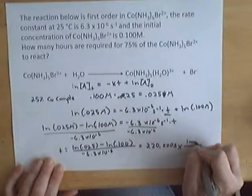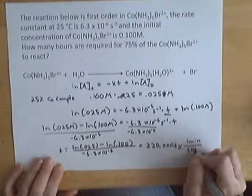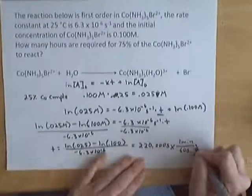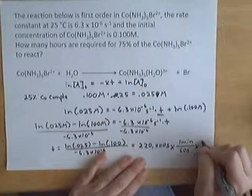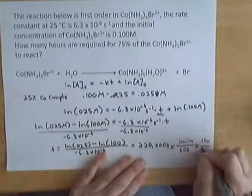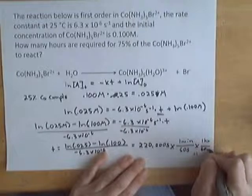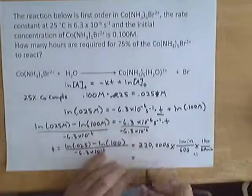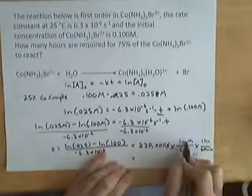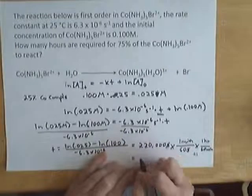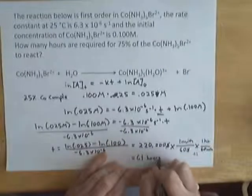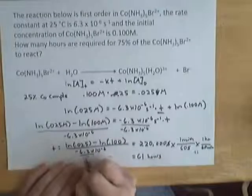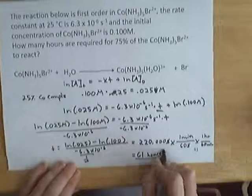In one minute, there's 60 seconds, and in one hour, there's 60 minutes. So my answer here, seconds cancels seconds, minutes with minutes, and I ended up with 61 hours. This was 2 sig figs, so I rounded this to 2 sig figs.